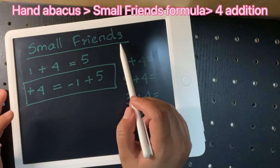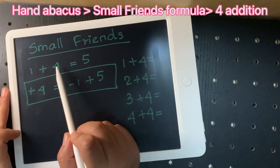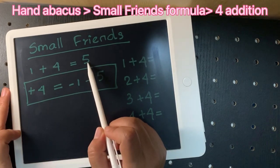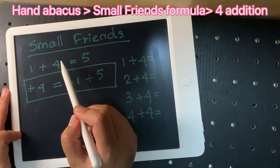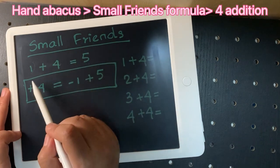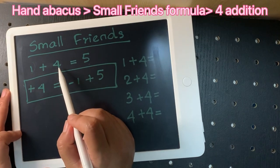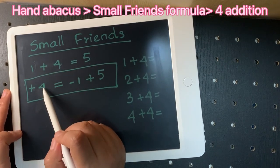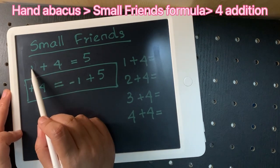Okay, Small Friends formula. Today, one plus four equals five. And the solution when learning, following the friend.